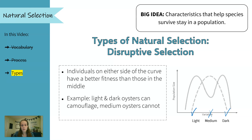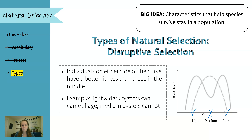So they're more easily picked up by predators and don't survive. And so in the next generation, we are more likely to have light colored oysters and dark colored oysters, but less likely to have medium colored oysters. With disruptive selection, we're disrupting the curve — you can see that dip in the middle of the curve where we've disrupted the pattern of variation.